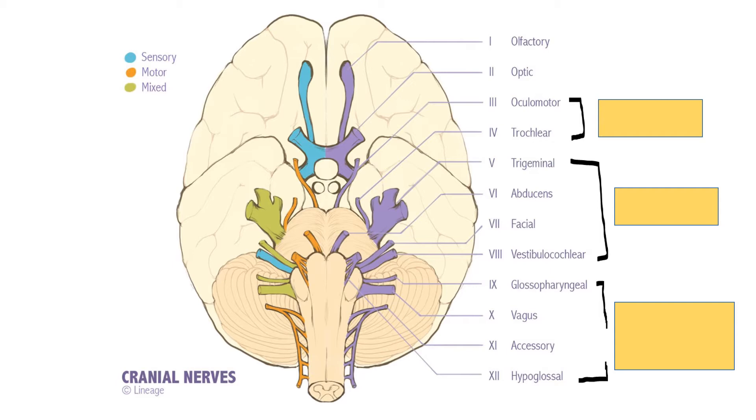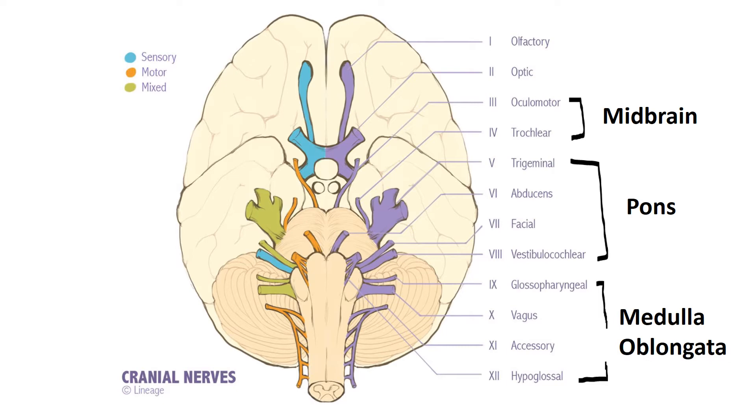Now note that cranial nerve three and four emerge from the midbrain. Cranial nerves five, six, seven, and eight emerge from the pons. Cranial nerves nine, ten, and twelve emerge from the medulla oblongata.